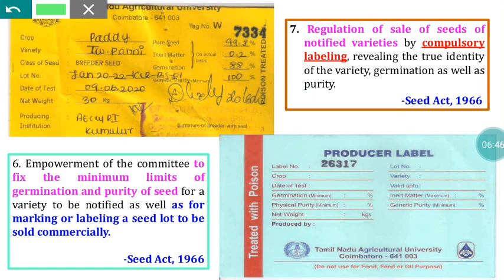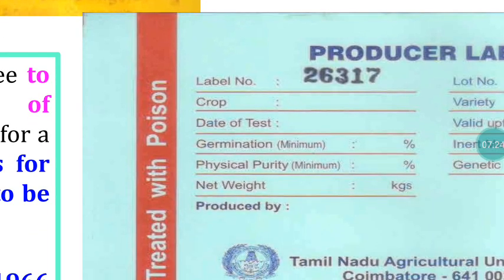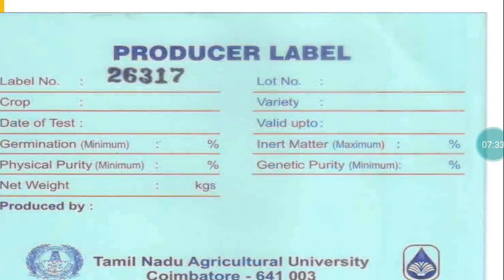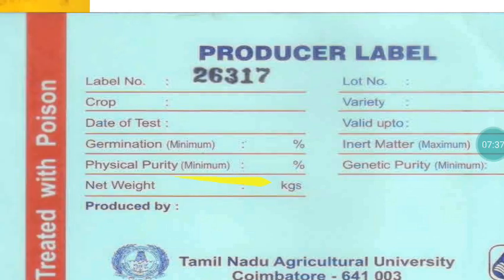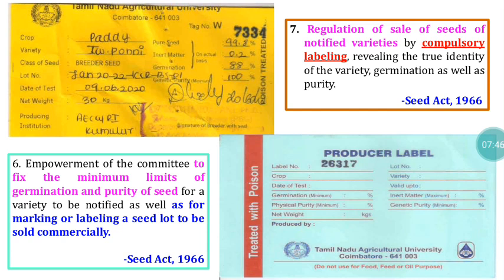Labeling is compulsory — without labeling we cannot go for sale. As for the tag, a white-colored tag is given for foundation seed and a blue-colored tag is given for certified seed. As per Section 7 of the Indian Seed Act 1966, labeling is compulsory and certification is voluntary. For labeling, we have to publish all data like germination minimum, physical purity, genetic purity, moisture content, and everything — only then can we put up a label.